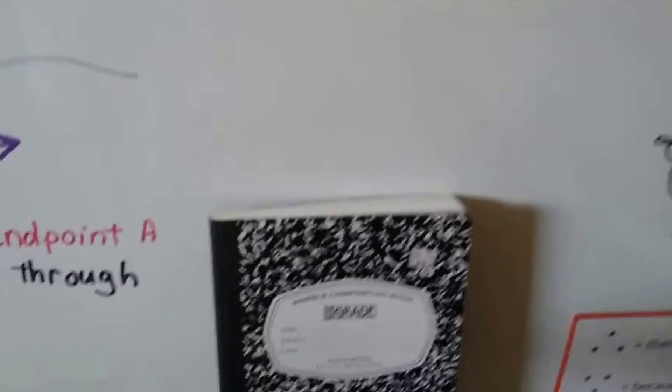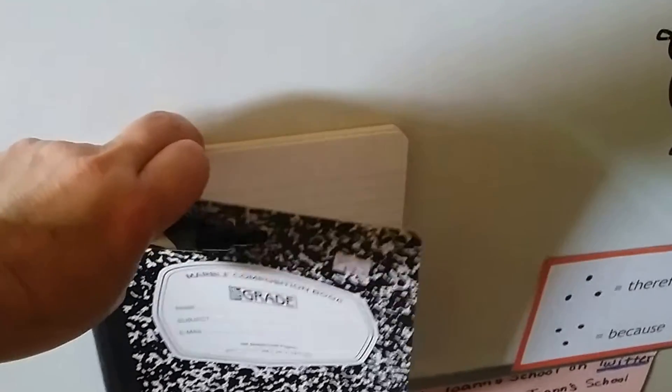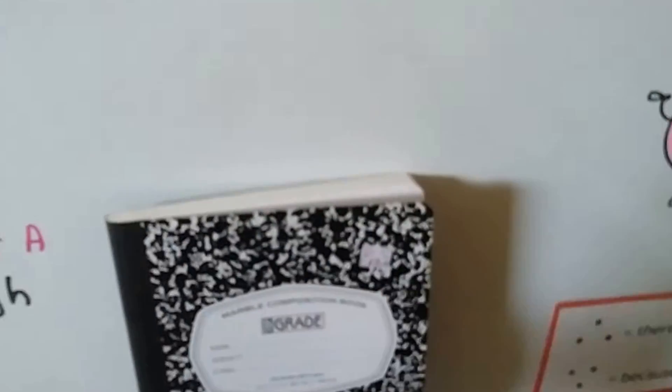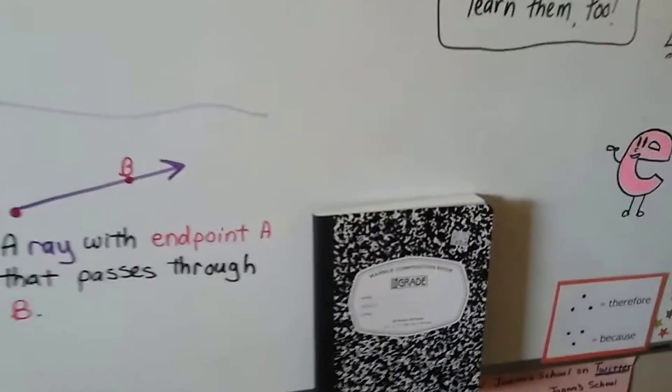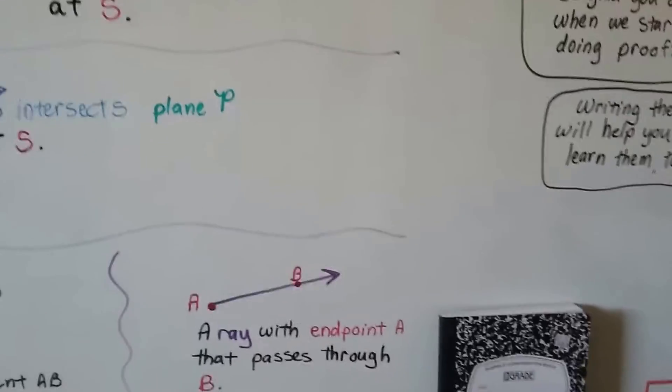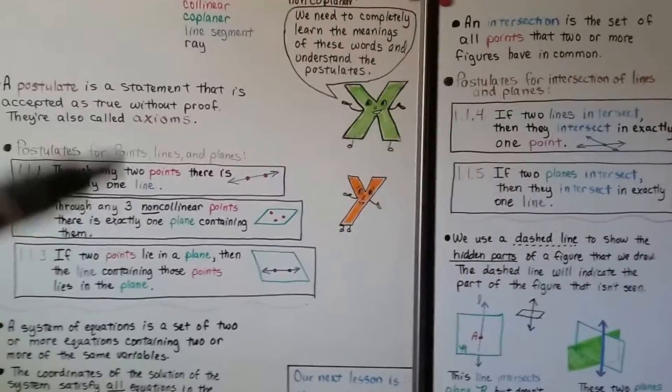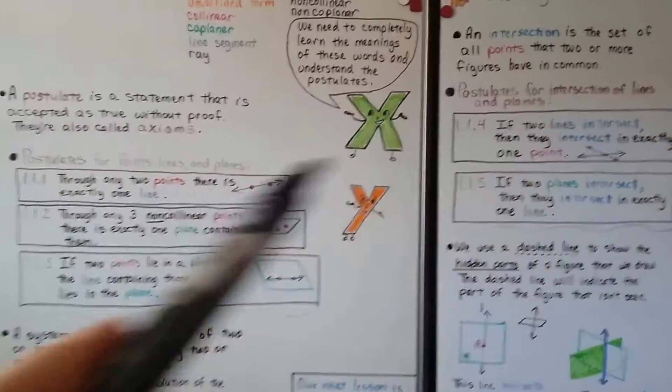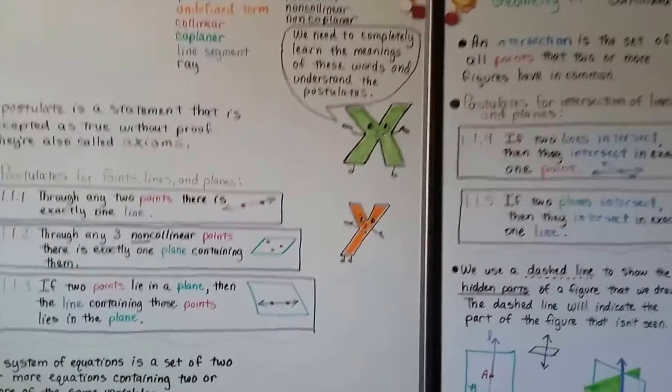So you can get yourself a simple notebook and put all your postulates, theorems, axioms, and definitions in it. You could even get a spiral that has sections and make one section for theorems, another section for postulates, and another section for definitions. But we're going to have a lot of these, and you're going to want to have them at your fingertips.